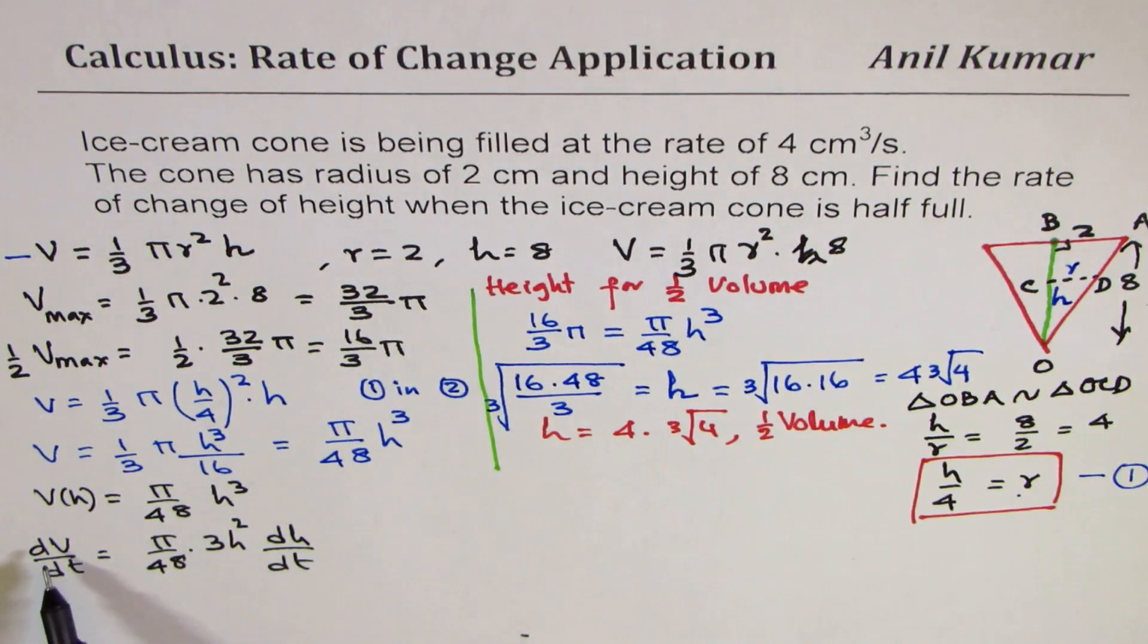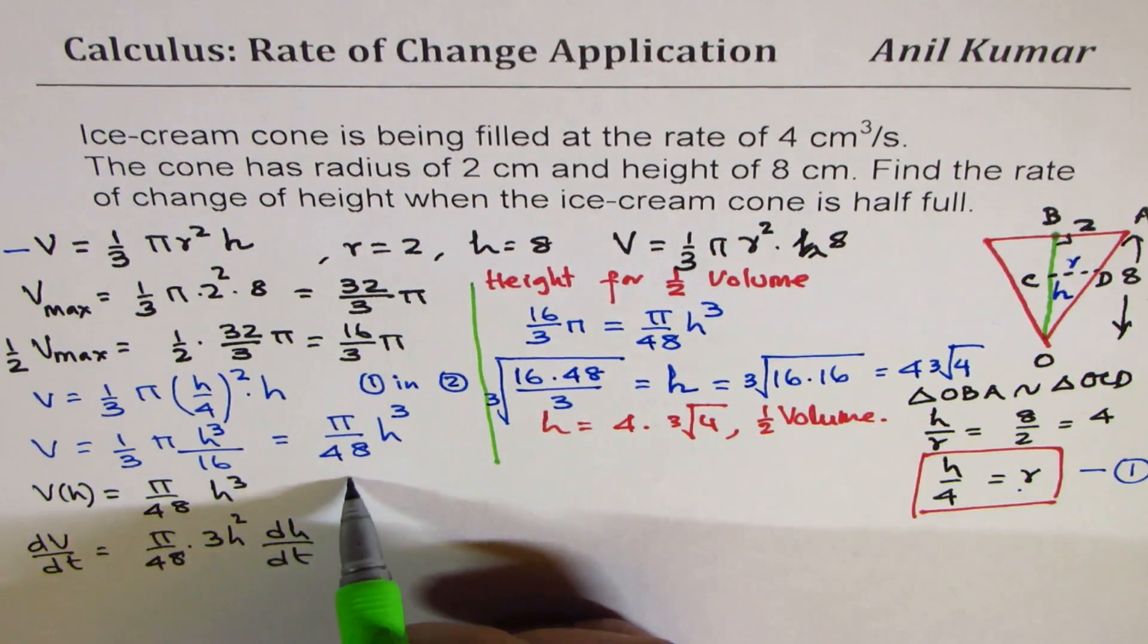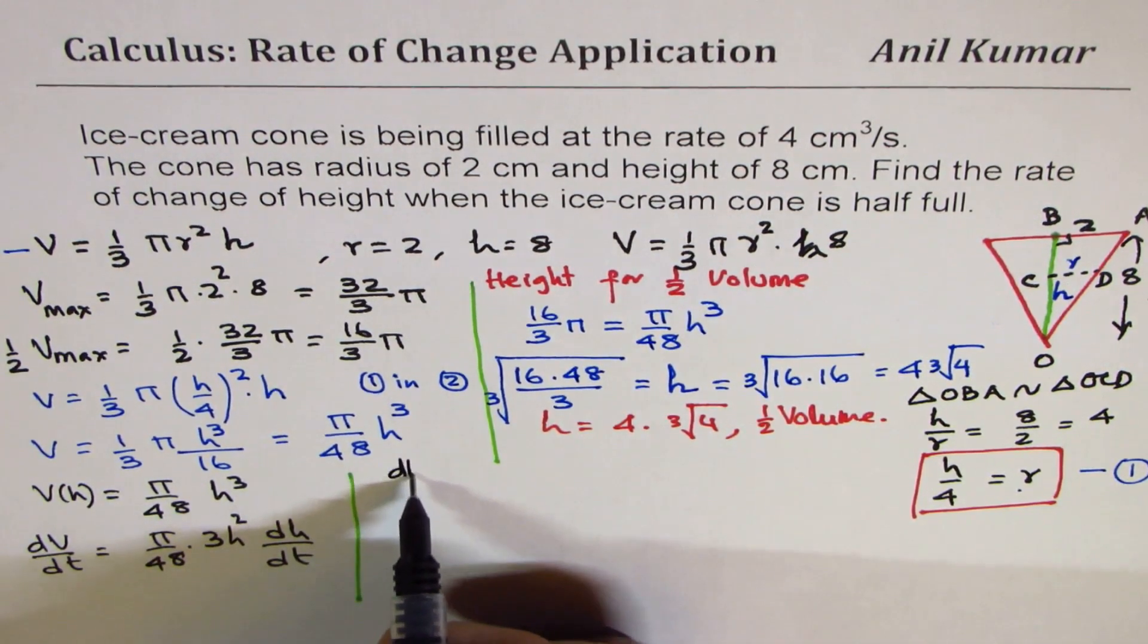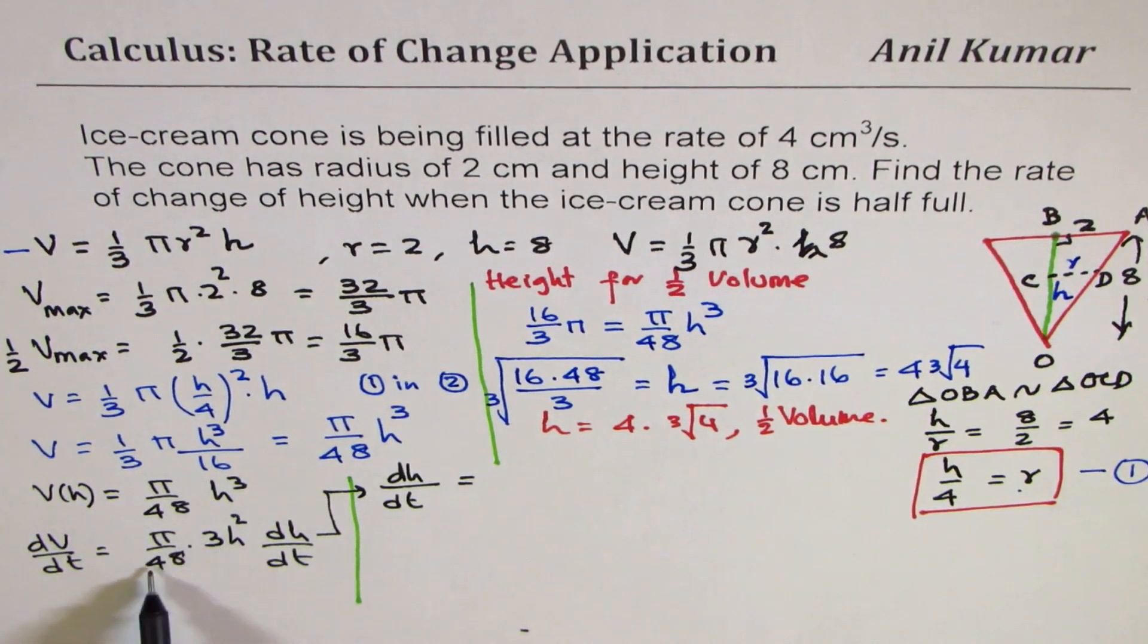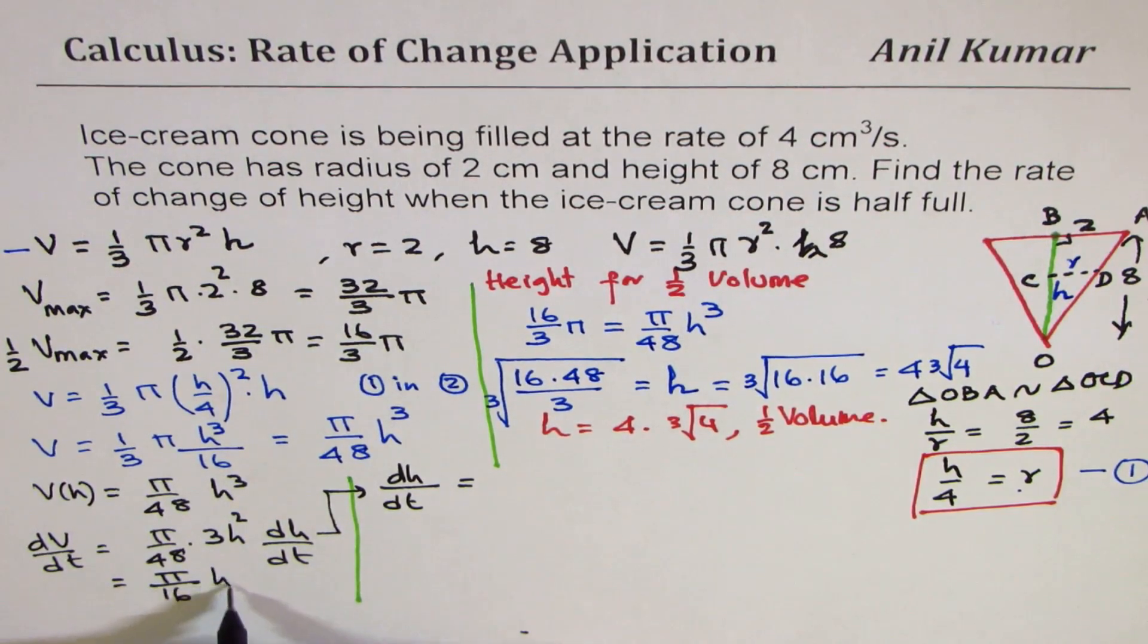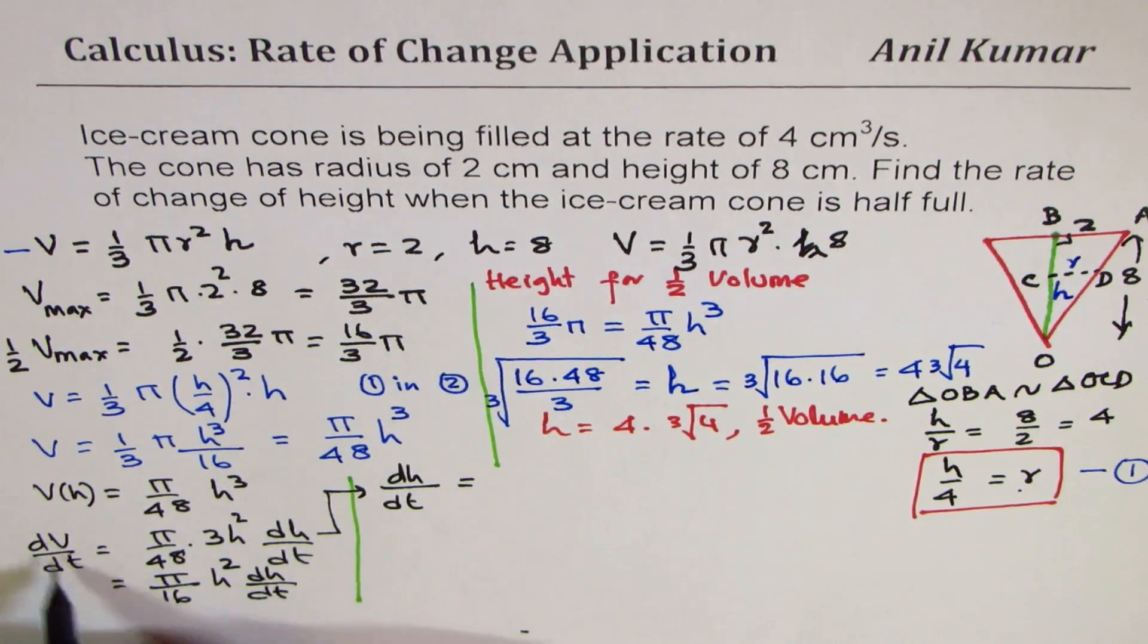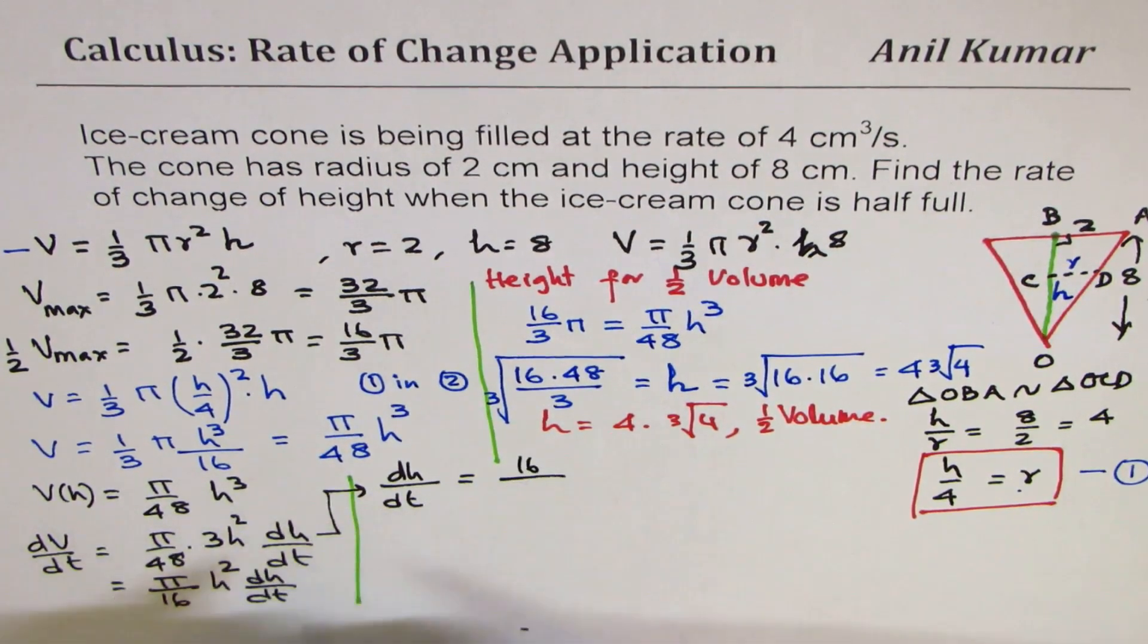Now we can simplify this and write down what dh/dt is. So we'll take it on the right side. And we can write dh/dt from here as equal to—you could simplify this. 3 times 16 is 48. So let me write here first (π/16)h²(dh/dt) is dV/dt. So dh/dt is equal to (16/πh²) times dV/dt.